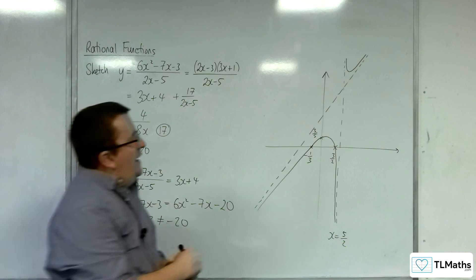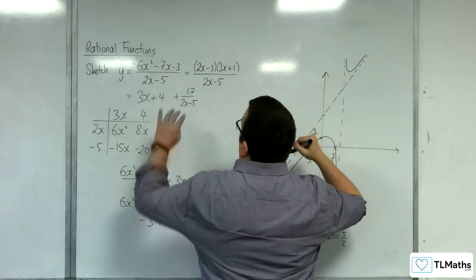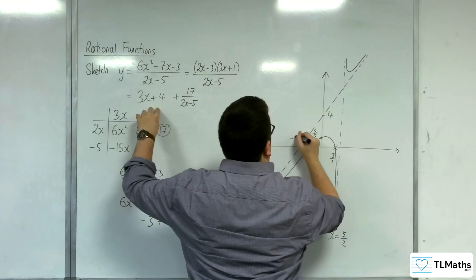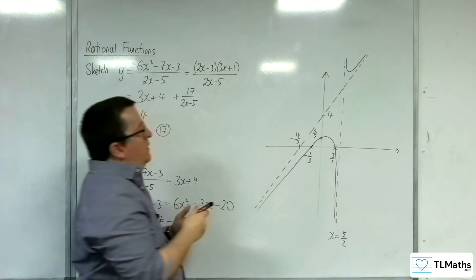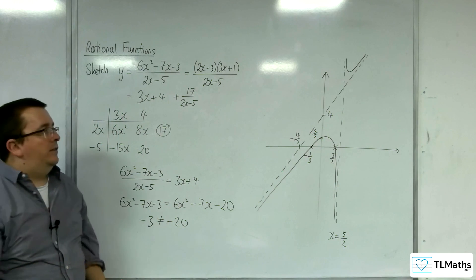Oh, just adding on to the sketch, I might as well add where the oblique asymptote is crossing the axes as well.